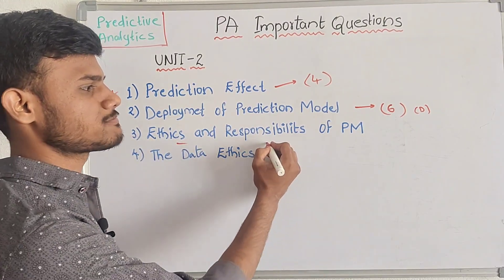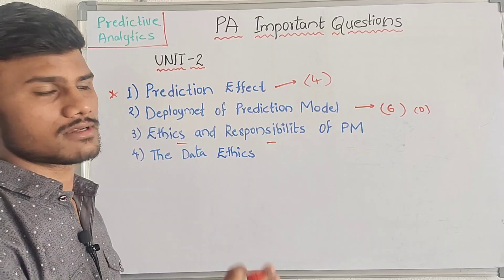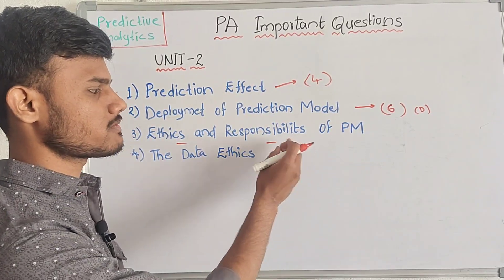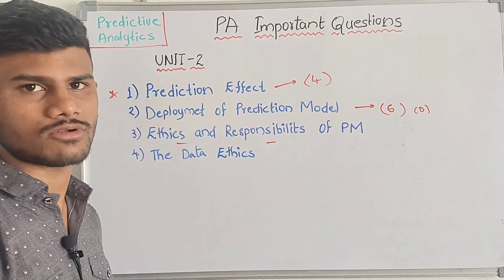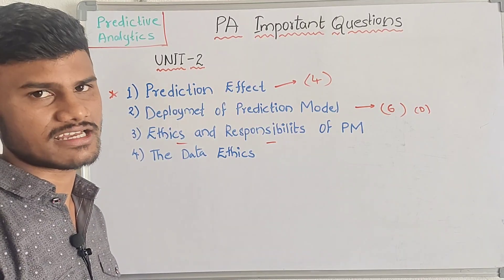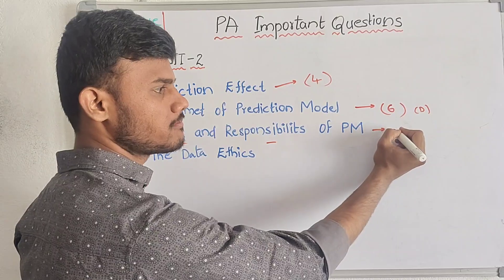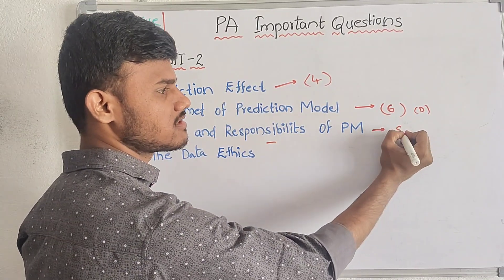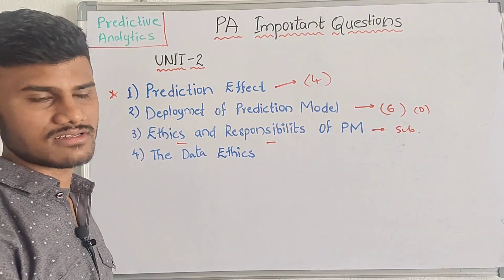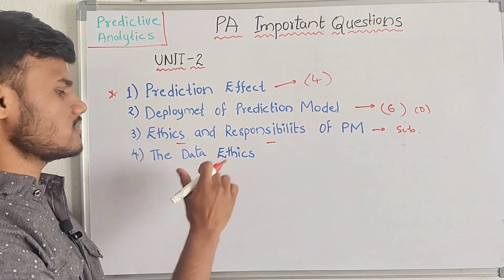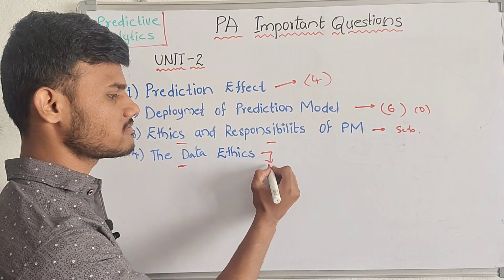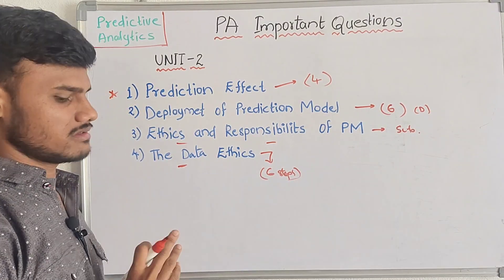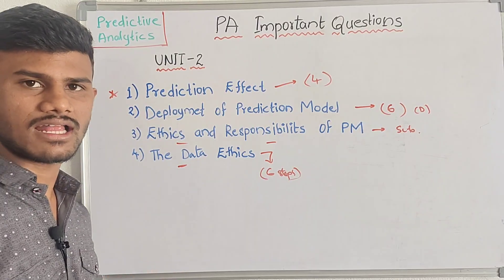Next is ethics and responsibilities of PM — predictive model. Responsibilities and ethics are very easy. You have to explain it using side-headings and sub-headings. There are six steps in data and ethics. It is very easy.